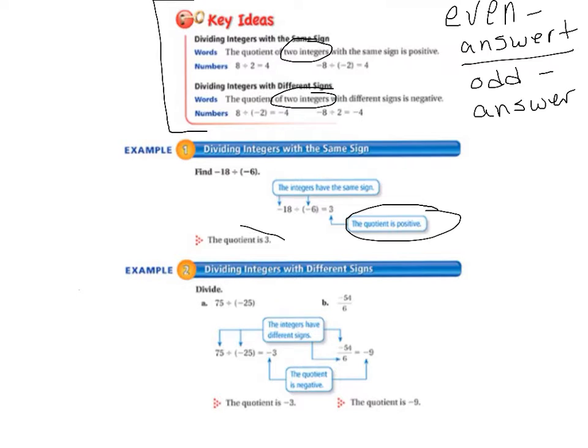And example 2, we'll be dividing integers with different signs. Letter A is 75 divided by negative 25. So, 75 divided by 25 is 3. We have one negative sign. So, 1 is an odd number. So, the quotient is negative.